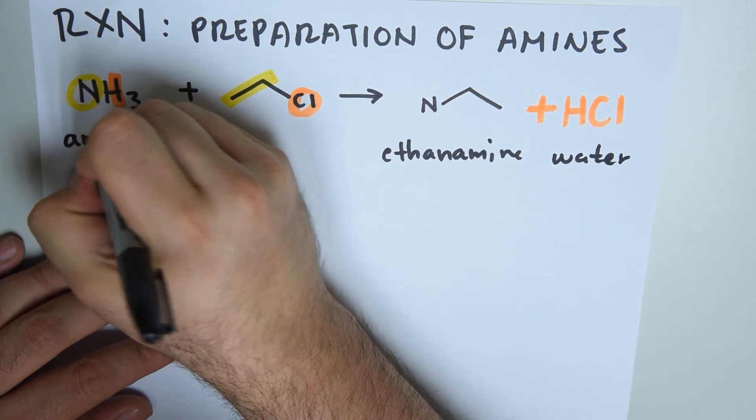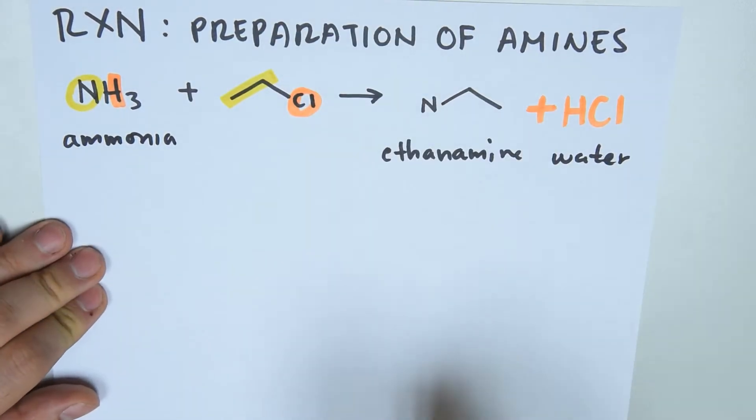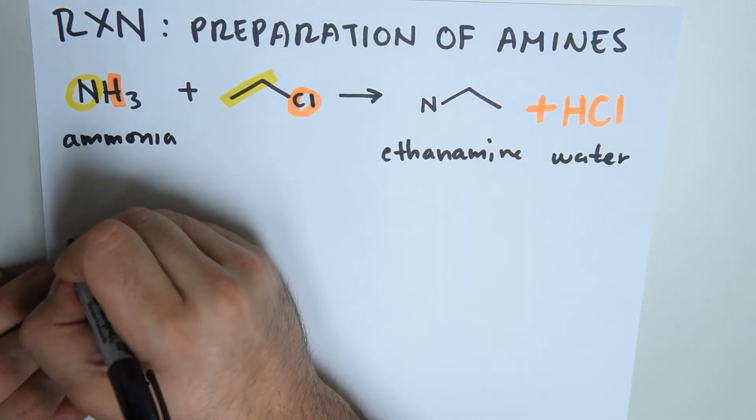This is when we begin with a molecule of ammonia. What happens when we begin with another amine? Let's take the same example from this one. Let's say our first reactant was ethanamine.